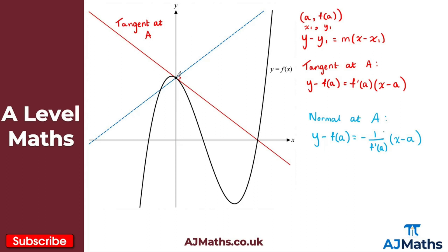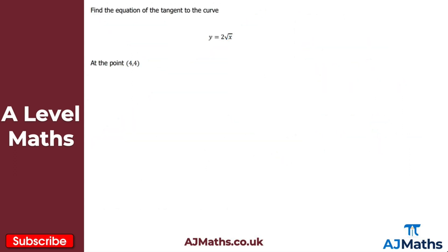And that gives us the normal at a to this curve y equals f of x. That would give us the tangent at a and the normal at a. So the only thing left to do now is have a go at a couple of practice questions. Moving on to our first question: we want to find the equation of the tangent to the curve y equals 2 lots of the square root of x, at the point 4, 4.